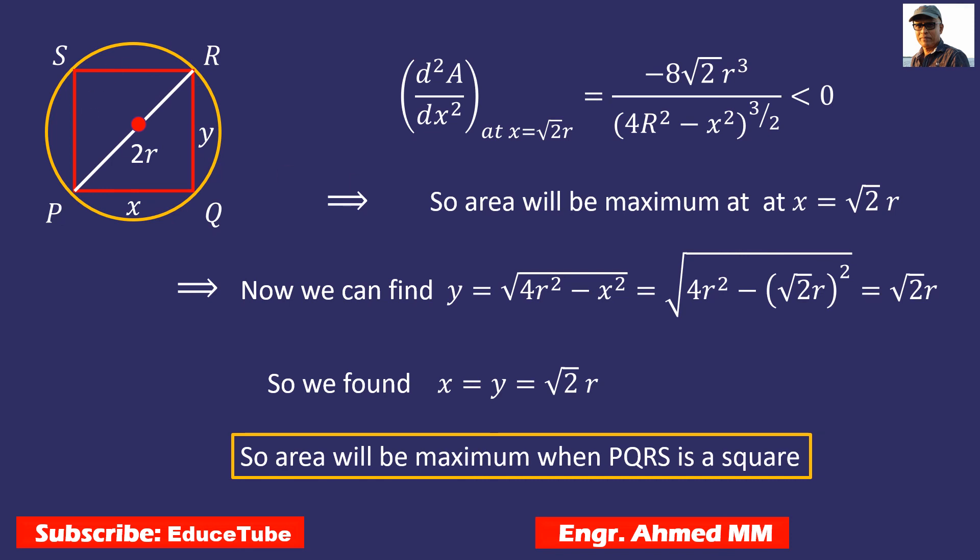So surely it is a square. Area will be maximum when PQRS is a square. We are now 100% sure and we are done.